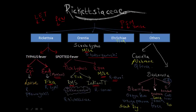Bartonella is divided into three: Bartonella bacilliformis, Bartonella quintana, and Bartonella henselae. Bartonella bacilliformis is transmitted by sandfly and causes Oroya fever and Verruga peruana. Bartonella quintana is transmitted by louse — remember louse also transmits epidemic typhus — and it causes trench fever.